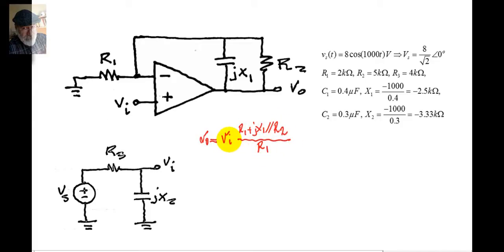However, VI, the input voltage here, is just the voltage divider of Vs between these two impedances.